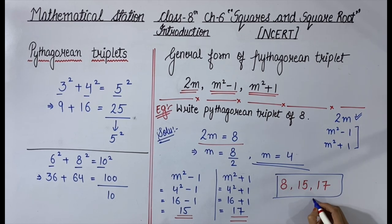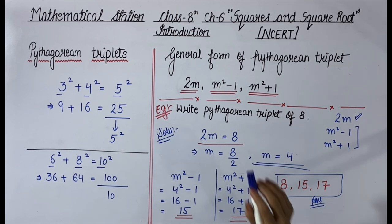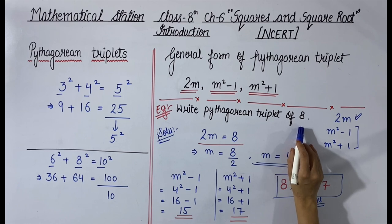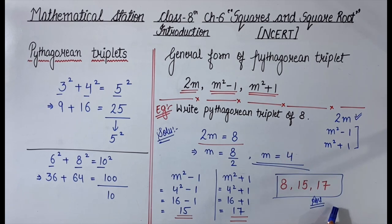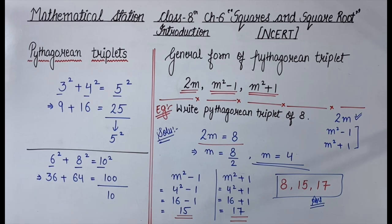This is the answer. In the exercise, similar questions will appear — one number of the Pythagorean triplet will be given and you need to find the other two. This was all about Pythagorean triplets and the last introductory topic for Exercise 6.2. In the next video, we will solve example questions from Exercise 6.2. If you have any doubts, mention them in the comment section. Please like, share, and subscribe if you liked today's video. Your support really means a lot. Bye bye, take care!